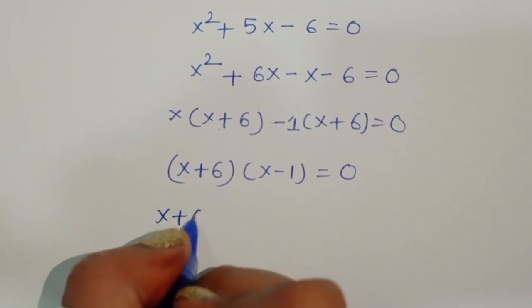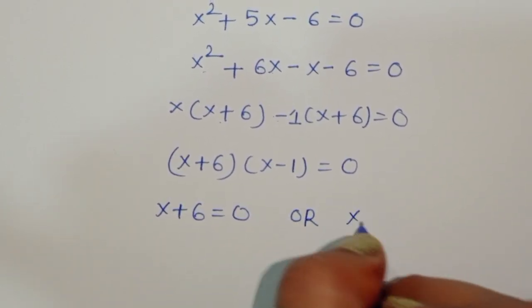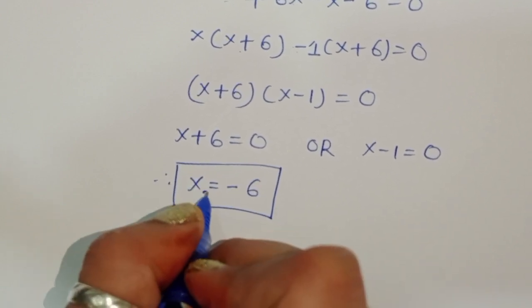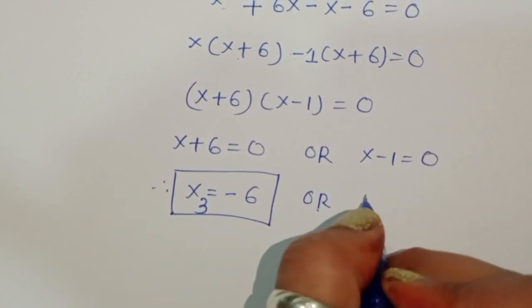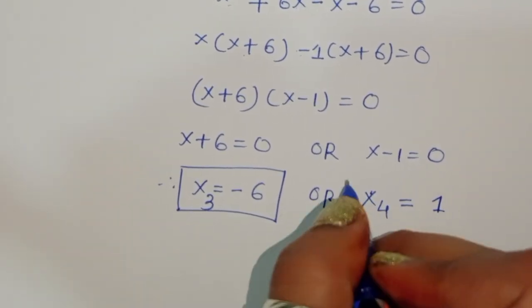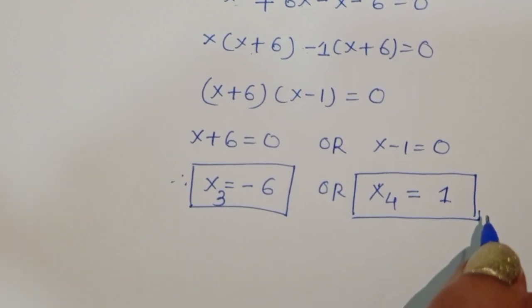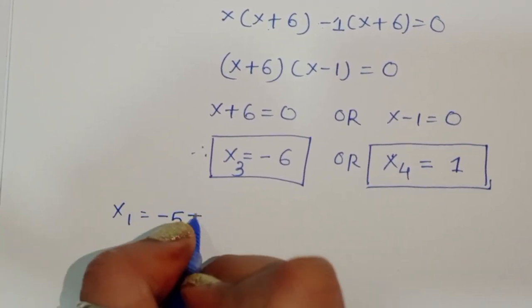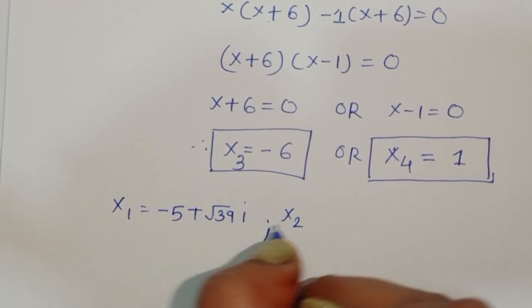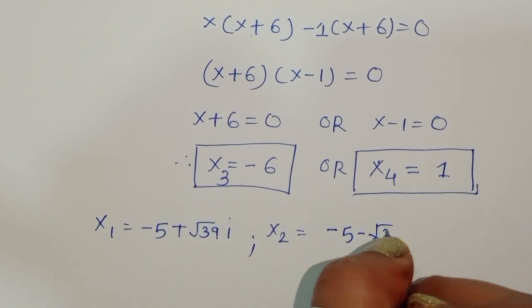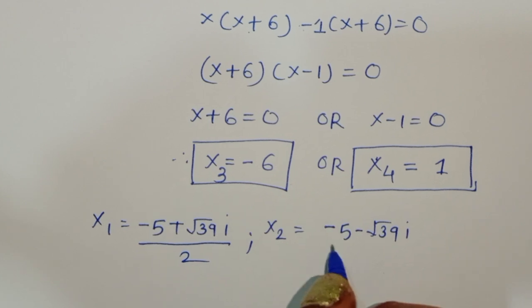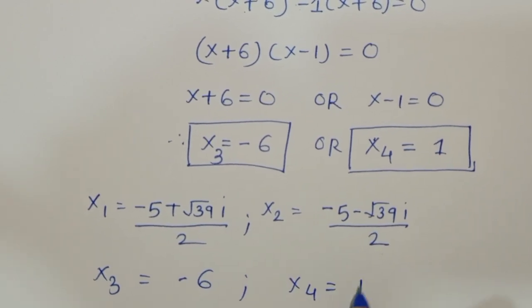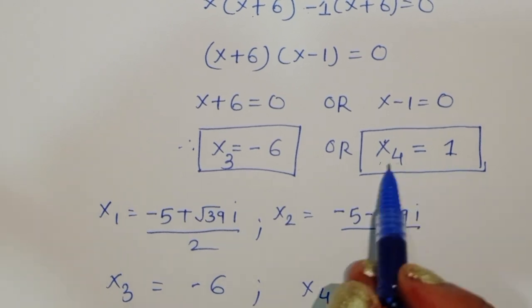From (x + 6)(x - 1) = 0, either x + 6 = 0 giving x₃ = -6, or x - 1 = 0 giving x₄ = 1. So we have four values of x in total.